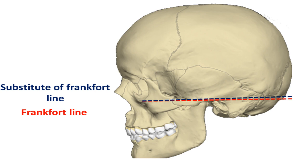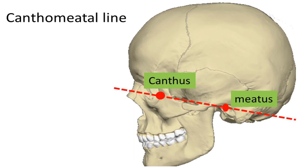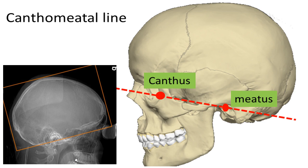This is the Frankfurt line, and let's go to another line now. This line connects the canthus to the meatus, so it is called the original orbito-meatal line or the cantho-meatal line. There is also a modification for that line, but first we need to know the importance of this line. It is the line of the scout of the CT scan, because it covers the three fossae from the start, including a major part of the posterior fossa.